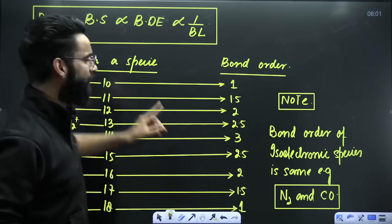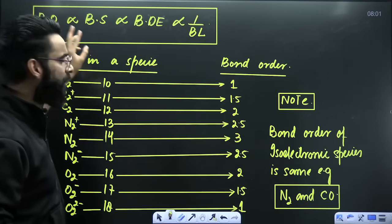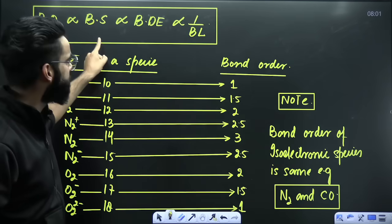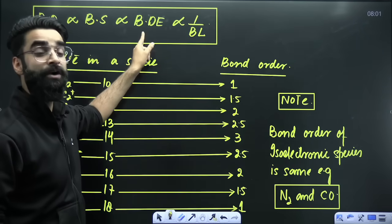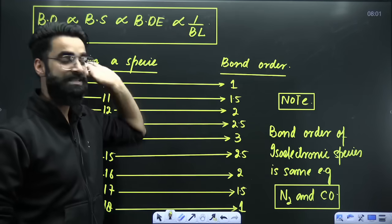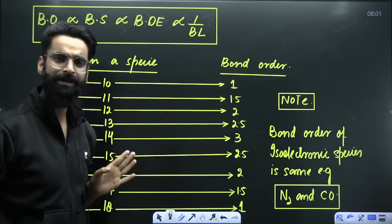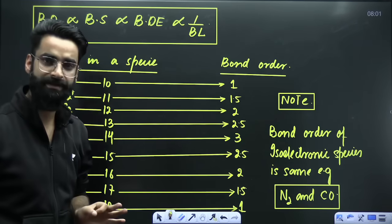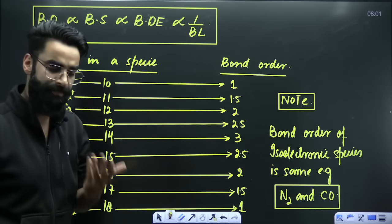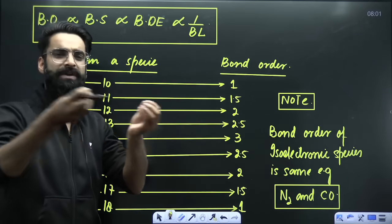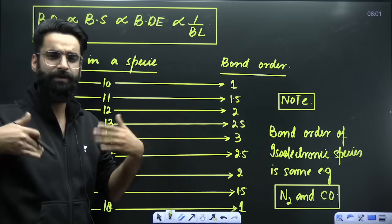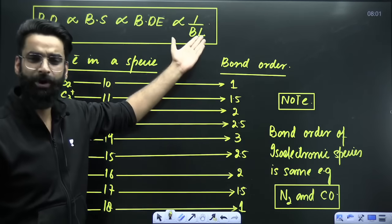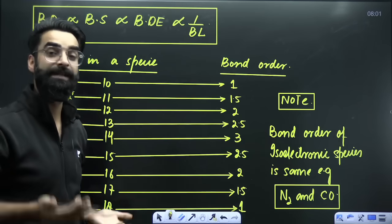Students, one particular statement which you need to remember: Bond Order is directly proportional to Bond Strength, which is directly proportional to Bond Dissociation Energy, which is inversely proportional to Bond Length. This is the trend from which anything can be asked. You can be given three or four species and you'll have to compare their Bond Orders, Bond Strengths, Bond Dissociation Energies, and Bond Lengths — and you can easily do that.